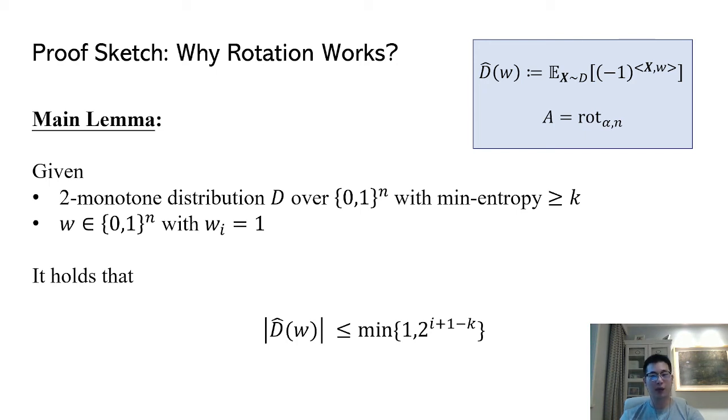Our lemma says that the absolute value of the Fourier coefficient of any two-monotone distribution at some vector w is small if the i-th bit of w is 1 for some small index i. For example, if dA is uniform over the first k bits, as long as the first k bits of w contains 1, its Fourier coefficient is 0. This formally captures the intuition that the lower-order bits of two-monotone distributions should have high entropy.